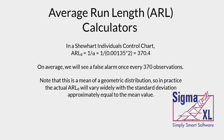In a Shewhart individuals control chart, ARL zero is equal to 370.4. On average we'll see a false alarm once every 370 observations. Note that this is a mean of a geometric distribution, so in practice the actual ARL zero will vary widely with the standard deviation approximately equal to the mean value.